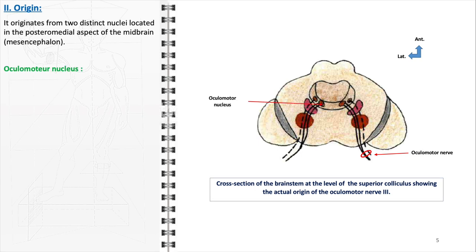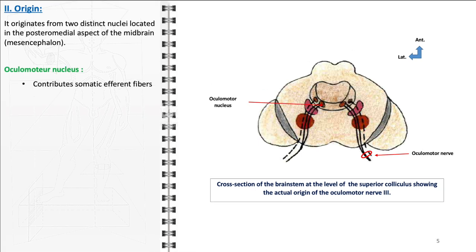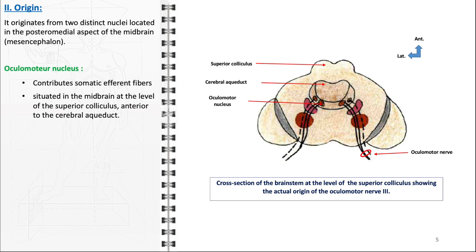The oculomotor nucleus, responsible for somatic efferent fibers, is strategically situated in the midbrain at the level of the superior colliculus, specifically anterior to the cerebral aqueduct. The fibers originating from this nucleus are primarily involved in motor functions. They innervate most of the extraocular muscles, which are crucial for the execution of coordinated eye movements. Additionally, these fibers also supply the levator palpabri superioris muscle, essential for eyelid elevation.